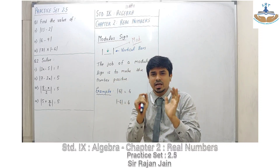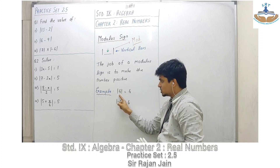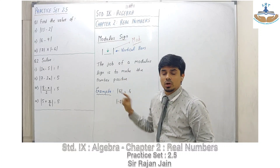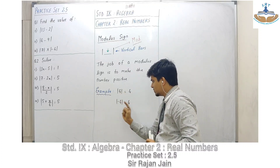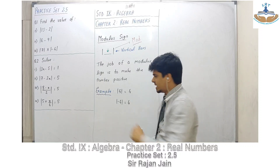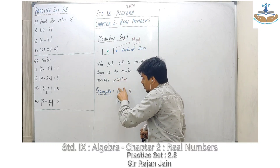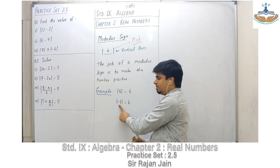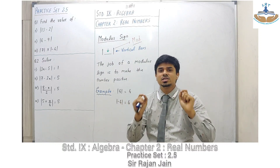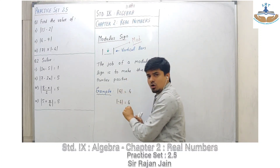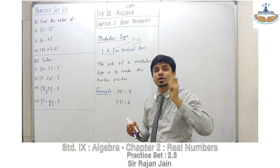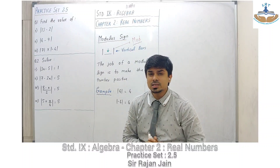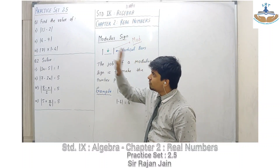For example, mod of 4 is read as 'mod of four' and equals 4. Mod of minus 4 is also 4. So whatever number is inside the modulus sign, it makes that number positive. A positive number stays positive, and a negative number also becomes positive. Modulus sign operates on a single number, and the final answer is always going to be a positive answer.